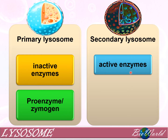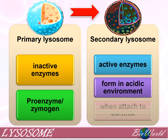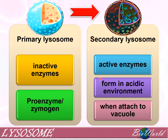Under what circumstances does the primary lysosome convert into a secondary lysosome? That happens in two situations. First, when the cell starts to become acidic — this occurs when the cells become old. The second situation is when the lysosome attaches to a vacuole. Let me explain when these events actually happen.